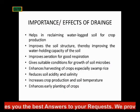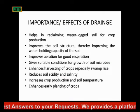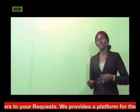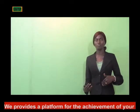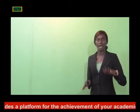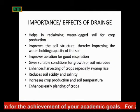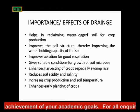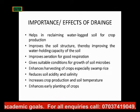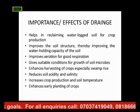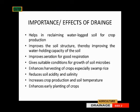Then, it gives suitable conditions for growth of soil microbes. When there is aeration, then there will be good respiration for the soil microbes to grow and they will be able to perform their activities fully. Then, it enhances harvesting of crops, especially swamp rice. Also, it reduces soil acidity and salinity. It also increases crop production. Last but not least, it enhances heavy planting of crops.